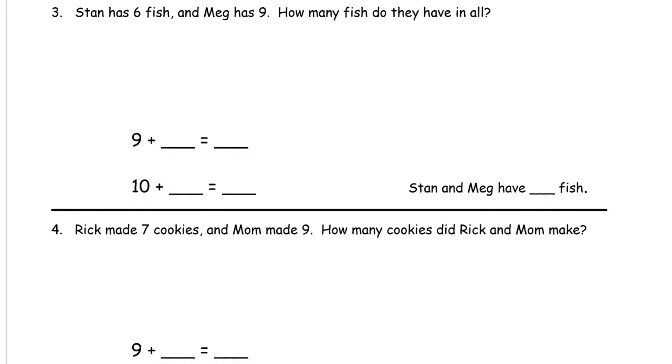Stan has six fish and Meg has nine. How many fish do they have in all? Stan's six fish: one, two, three, four, five, six. Meg has nine: one, two, three, four, five, six, seven, eight, nine.